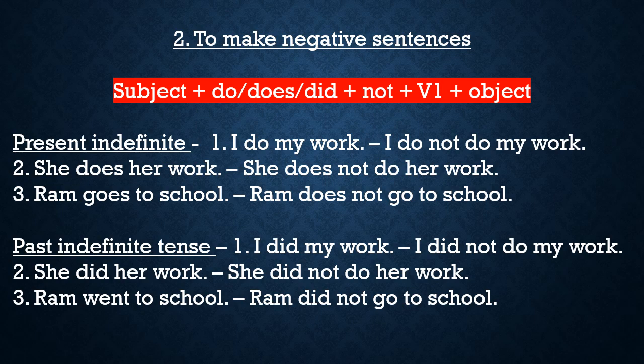To make negative sentences, do not, does not and did not is used before the first form of verb. Students should note that not is always written with the helping verb. Not hamesha sahai kriya ke saath hi lagaya jaata hai. In present indefinite tense, do not and does not is used with plural and singular subjects respectively. First example: 'I do my work' — its negative is 'I do not do my work' — main apna kaam nahi karti hun.